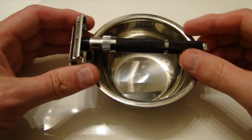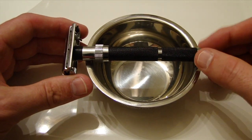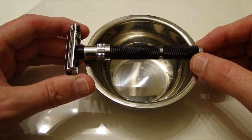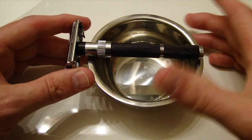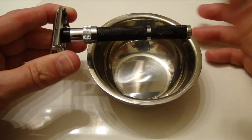To put it into perspective, this is a Parker 96R and the bowl itself, the razor measures in about four and a quarter, four and a half, and the bowl itself measures in to about four inches.